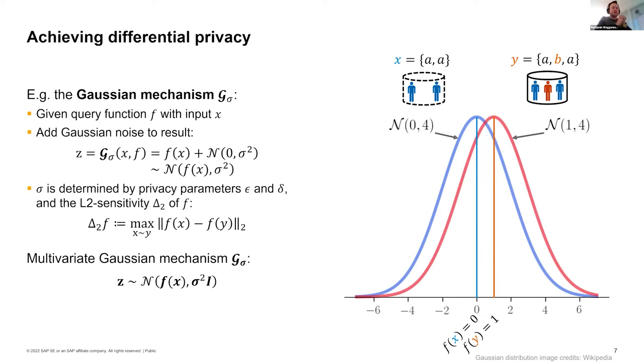The remaining question is, how do such mechanisms look like that actually fulfill this definition of differential privacy? The famous one, the most prominent one is the Laplace mechanism. But we will be using the Gaussian mechanism here. It's called that way because it applies Gaussian noise to the input. Your input is some function and then you apply zero-centered Gaussian noise with some variance. The variance or standard deviation is determined by the desired privacy parameters epsilon and delta according to what privacy guarantees you would like to have. You can generalize this to a multivariate instance in higher dimensional data. That's the part about differential privacy.